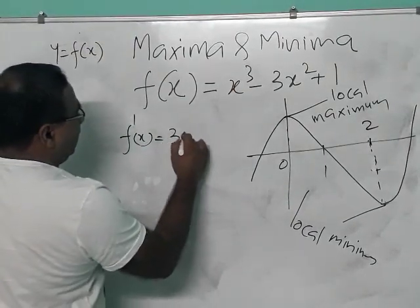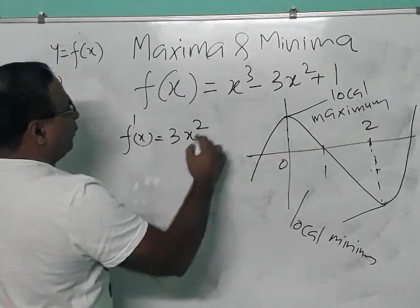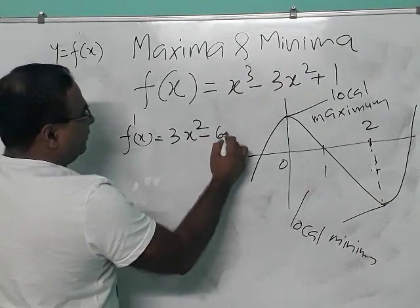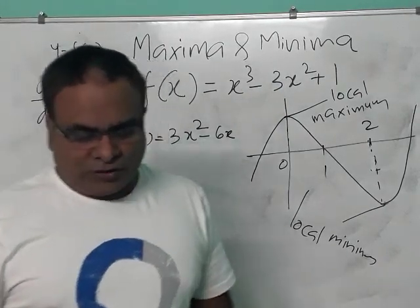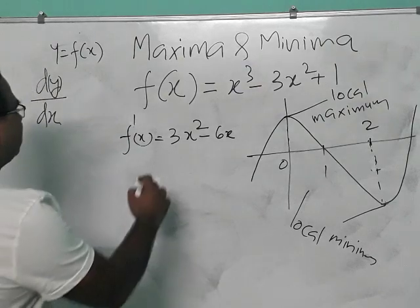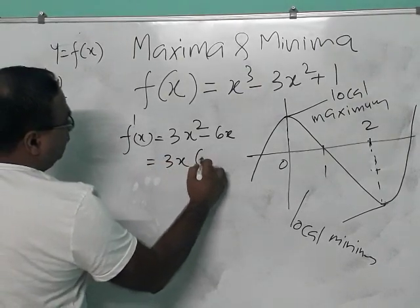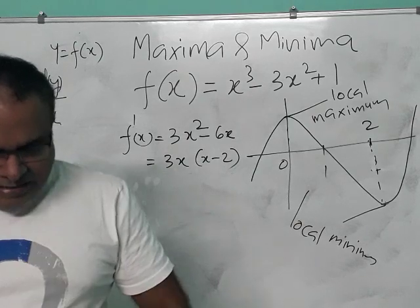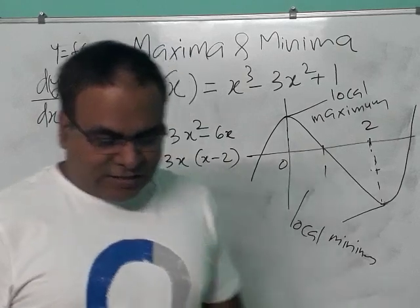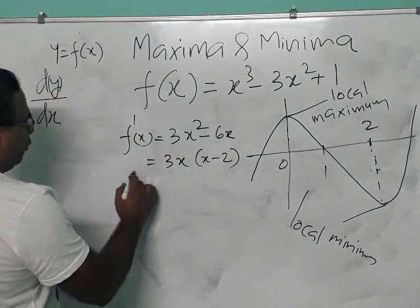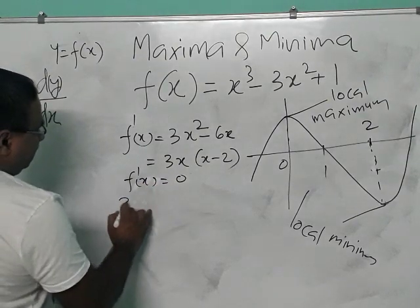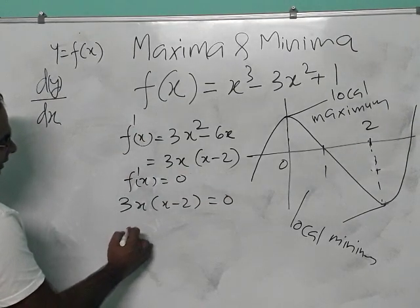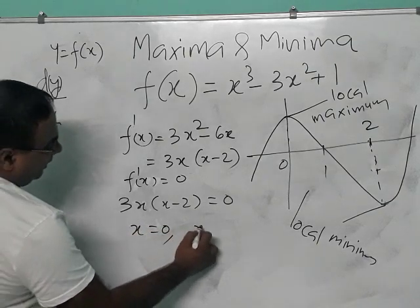Using the formula d/dx of x^n = n·x^(n-1), the derivative of x³ - 3x² + 1 gives: 3x² - 6x + 0. You can factor this as 3x(x - 2). This is the derivative f'(x).